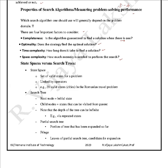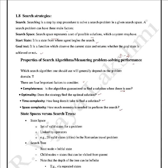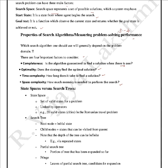Any searching algorithm can either be an informed or uninformed search strategy. Performance is measured based on these four parameters: completeness, optimality, time complexity, and space complexity.